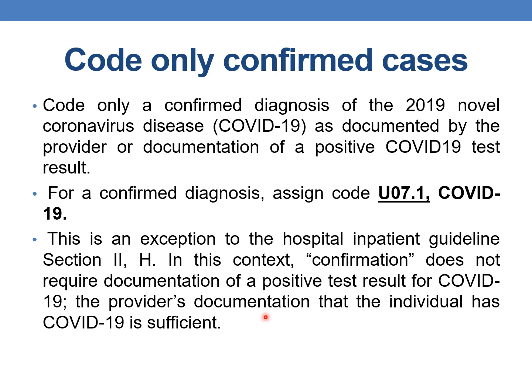In inpatient coding, confirmation does not require documentation of a positive test result. A simple provider documentation that the individual has COVID-19 infection is sufficient. The first rule is we must code only confirmed cases; cases which are suspected, possible, or likely should not be coded with U07.1.